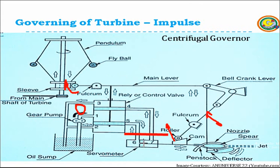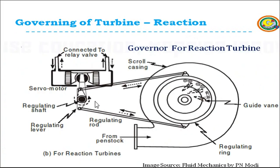Only the servo motor and components after it are changed in case of reaction turbine. Whenever load on the turbine or generator increases or decreases, oil flows into the servo motor in one direction or the other, moving the piston accordingly. As the piston moves, the regulating shaft rotates; through the lever, the regulating rod rotates the regulating ring, and ultimately the guide vanes rotate to increase or decrease the area of flow. This is the governing of the reaction turbine.